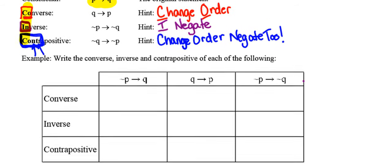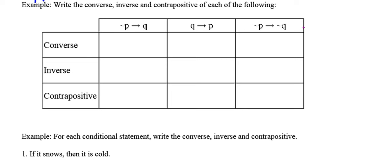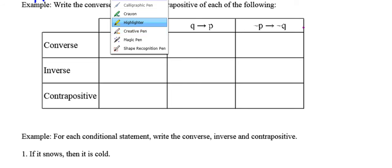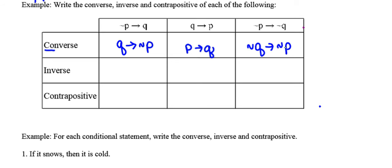Let's go ahead and look at this table and work through some of these. For the converse, C and O tells me to change the order. Looking at the first conditional and changing the order around, I end up with 'if Q, then not P.' Changing the order for the second gives 'if P, then Q.' Changing the order for the third gives 'if not Q, then not P.'